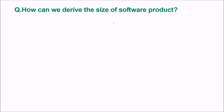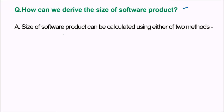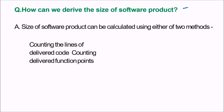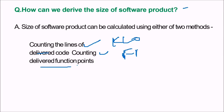How can we derive the size of the software product? The size of the software product can be calculated using either of two methods: you can count the lines of delivered code, or you can count the delivered function points — i.e., KLOC (lines of code) or FP (function points).